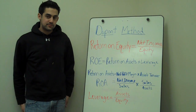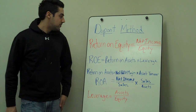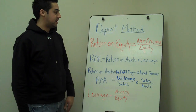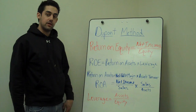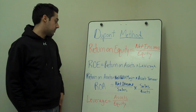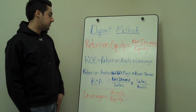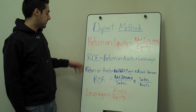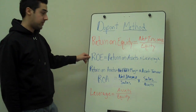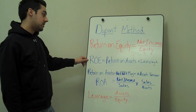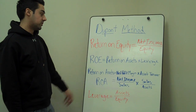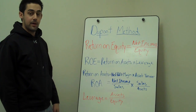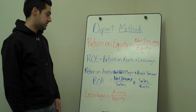What makes up the DuPont method? We normally think of return on equity as net income over equity. To break that down using the DuPont method, we think of return on equity as return on assets multiplied by leverage.